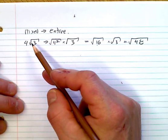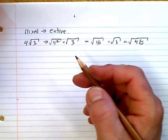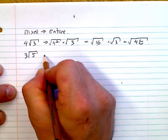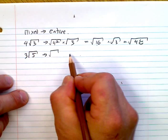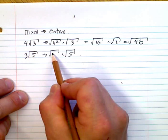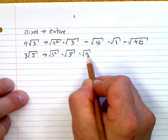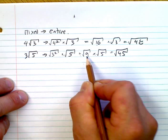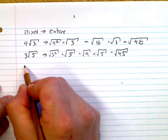Now 3 root 5 (square root). We square the 3: 3 squared is 9. So we get the square root of 9 times the square root of 5, which equals the square root of 45.